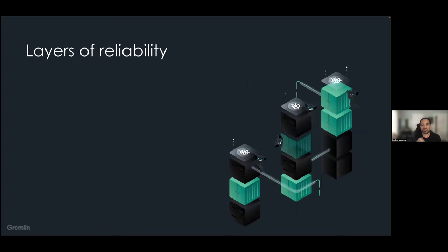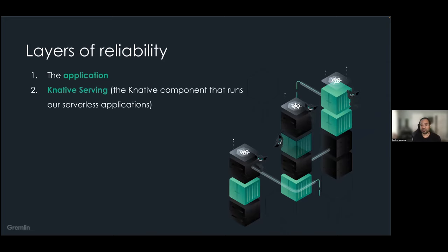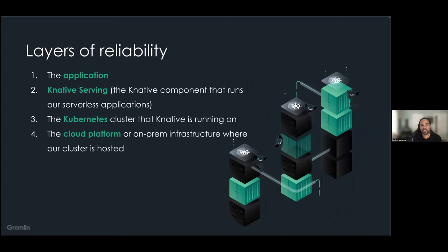Knowing what we know about Knative and Kubernetes, we can pinpoint four key areas where reliability is a concern: the application itself — the serverless workload developers deploy to Knative; Knative itself, specifically Knative Serving; the Kubernetes cluster that Knative runs on; and the cloud platform, on-prem infrastructure, or standalone server — essentially the hardware and environment the Kubernetes cluster runs on. Looking at ownership: the application layer is owned almost exclusively by developers, while the Knative and Kubernetes layers are owned more by SREs. The environment or cloud platform can be owned by SREs, operations teams, or a cloud provider depending on where the cluster is running.